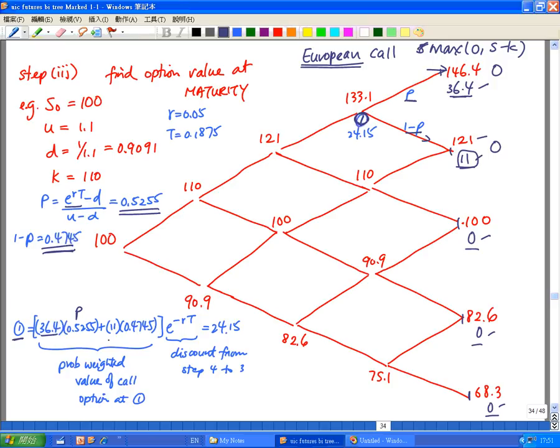Plus if the stock price had moved down to 121, the option value is 11. So that is my node, 11. And the probability of that would be 0.4745. So these two things added together is a probability-weighted value of the call option at 0.1.